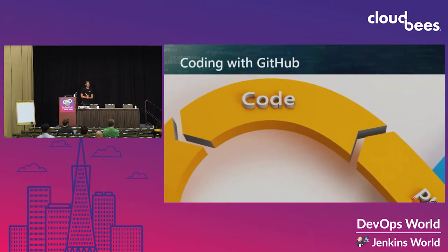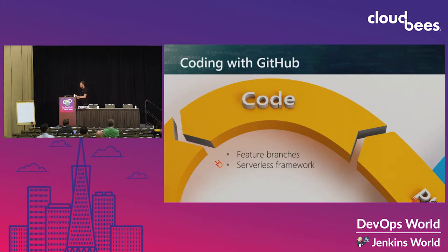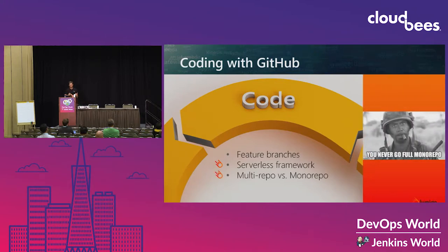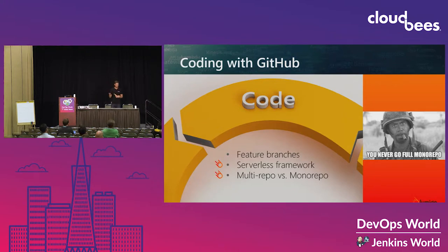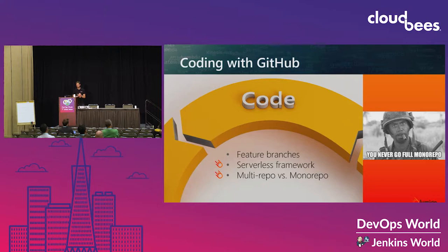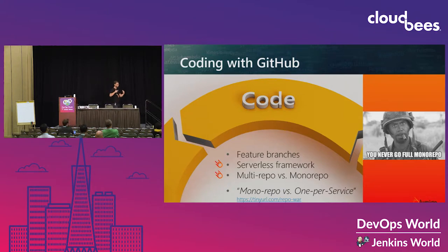On coding, we use GitHub with a branch-per-feature approach. We use the Serverless Framework as part of our implementation. On the multi-repo versus mono-repo debate — I'll tell you my view — we use multi-repo. We have a repo per flow in our environment, which makes our life much simpler when we want to change and work on a specific flow. We have a great blog about that if you're interested in how to implement your repo, especially in microservices and serverless.